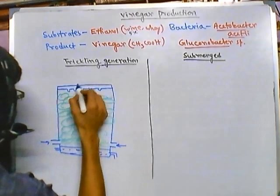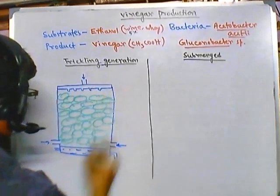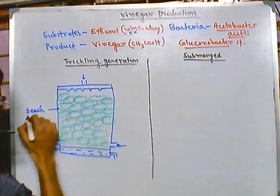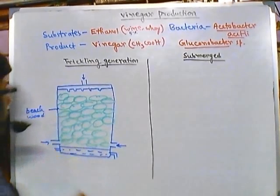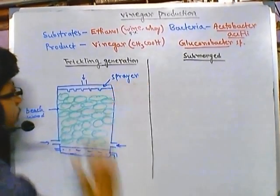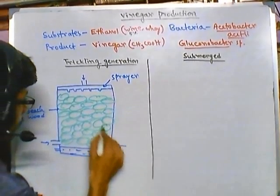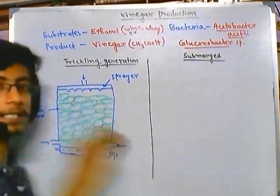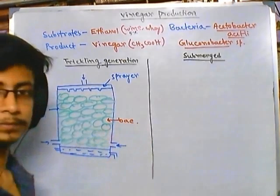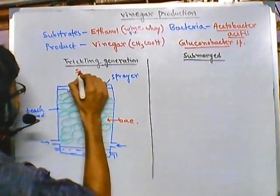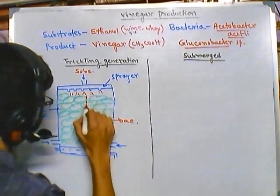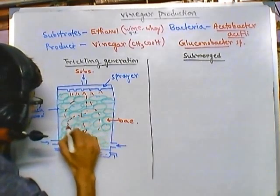The beech wood shavings are continuously packed with wooden materials, and they contain the bacteria of interest - for example gluconobacter or acetobacter. The bacteria are added into this wood. Then we apply our substrate through this sprayer. The substrate will migrate through the different channels between the wood shavings down to the bottom region.